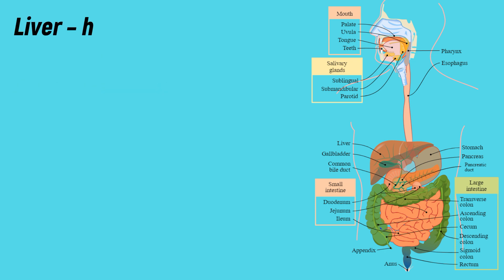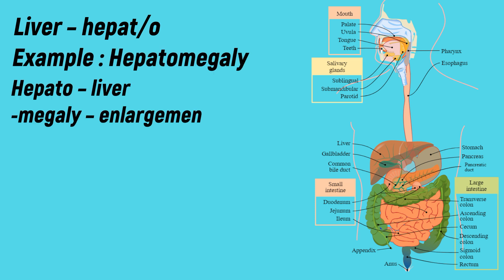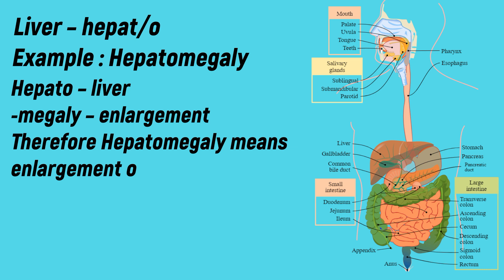Liver: the medical term for liver is 'hepato'. Example: hepatomegaly. -Megaly indicates enlargement and hepato indicates liver. Therefore, hepatomegaly means enlargement of the liver.